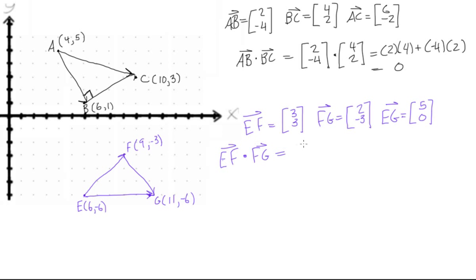EF dot FG. And that would equal, EF is [3, 3] dot [2, -3]. And this would equal, let's see, 3 times 2 is 6 plus 3 times negative 3, so it would be 6 minus 9, which is equal to negative 3. So the dot product is not 0, so these two vectors are not orthogonal.